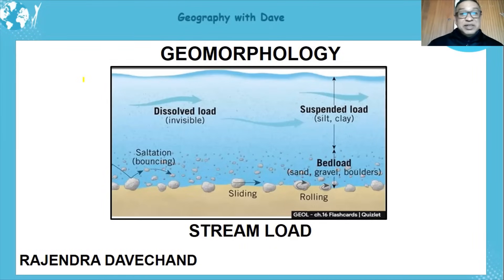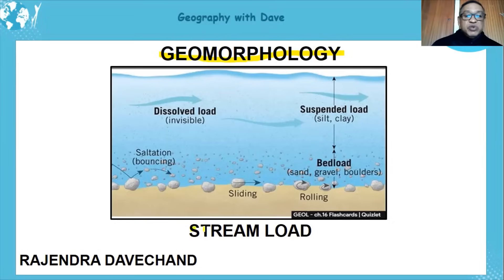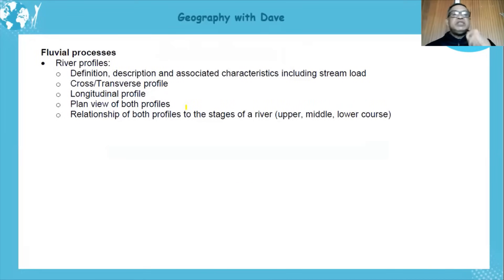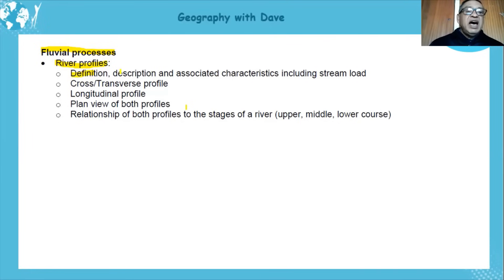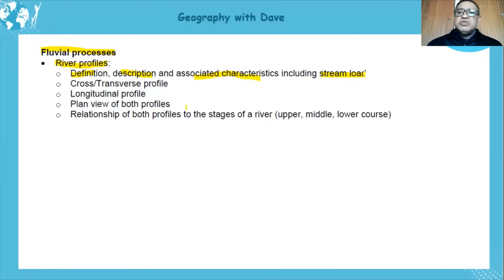Hello learners, hope you are keeping well. Today we are looking at Grade 12 Geomorphology, specifically a section added to the 2021 examination guideline: stream load. Looking at the 2021 guideline, we find fluvial processes under Geomorphology, and the specific topic of river profiles. We'll look at how stream load links to fluvial processes and river profiles today.